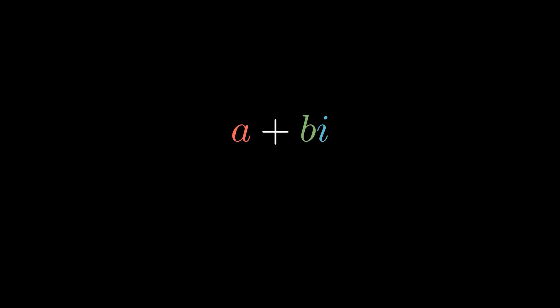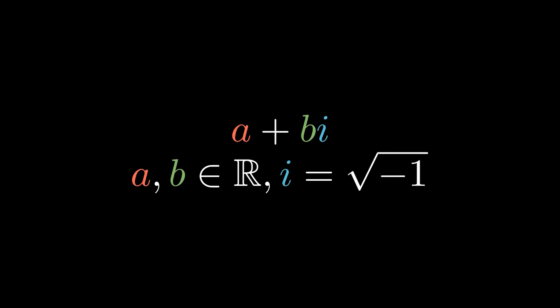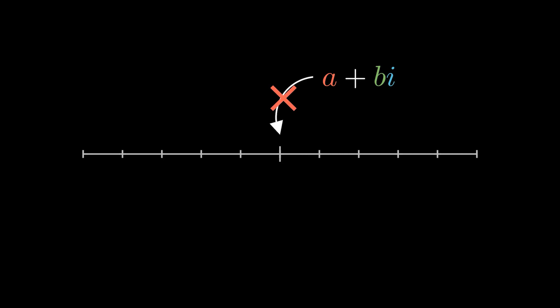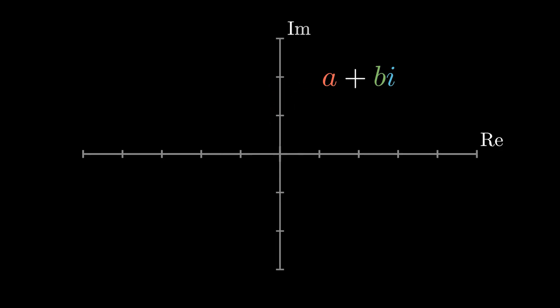Now I want to move away from trig functions for a bit and talk about complex numbers. Complex numbers have the form a plus bi, where a and b are real numbers and i is the imaginary constant, the square root of negative 1. A complex number can be described by its real and imaginary parts, and thus cannot be represented on the real number line. Instead, complex numbers are represented in a two-dimensional plane called the complex plane, with a real axis and imaginary axis.